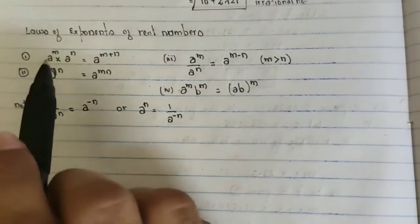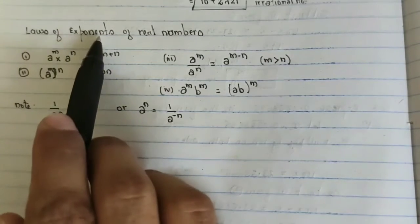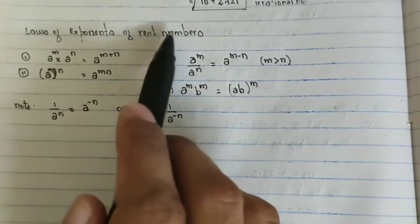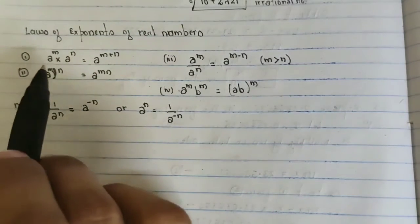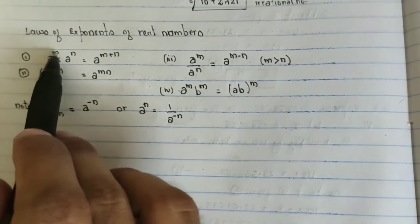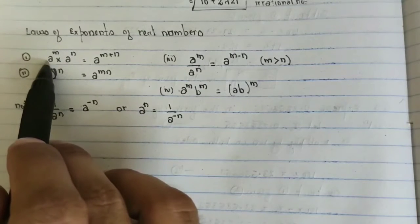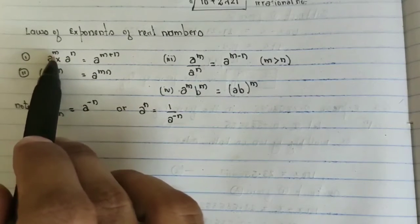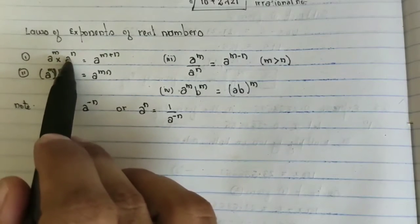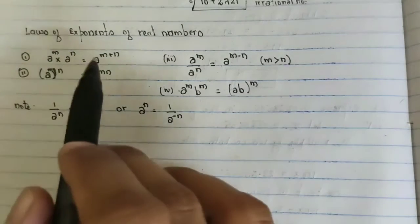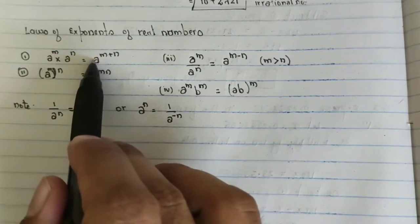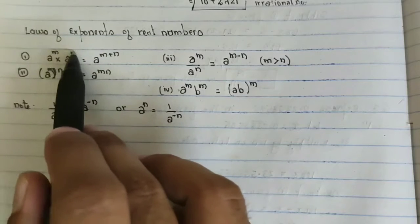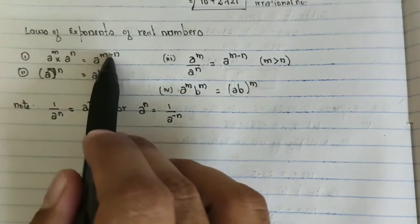Now we will see a few laws of exponents of real numbers, including rational and irrational numbers. If two numbers have the same base but different exponents and are being multiplied, you can write the common base raised to the sum of the exponents — you add the exponents together. This is the first rule. Second, if a base has two exponents — one inside a bracket and one outside — you multiply the exponents.